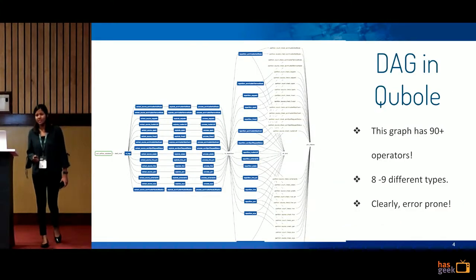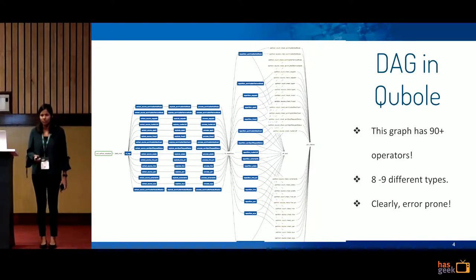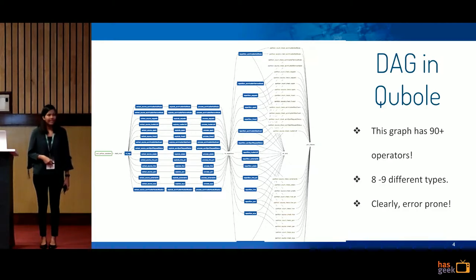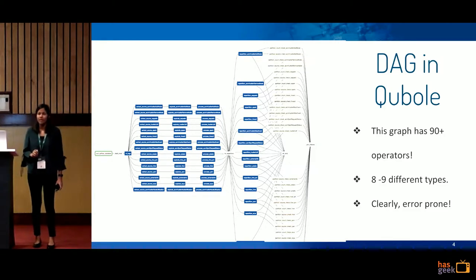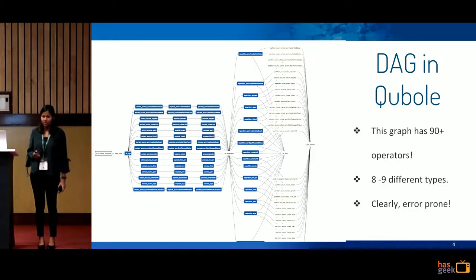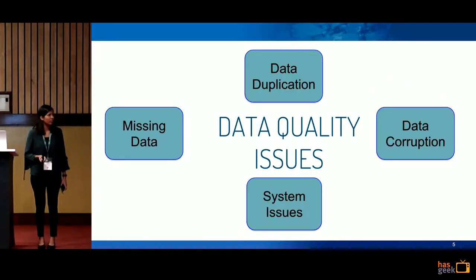Just to give you an idea about scale at QBOL, this is a typical DAG. This is one of the most involved DAGs we have. As you can see, it has 90-plus operators of 8 to 9 different types. If anything goes wrong in any of them, we might have data corruption issues. The biggest problem is that it's very hard to debug what went wrong and where — this is very error prone.